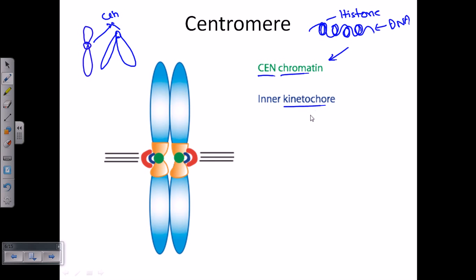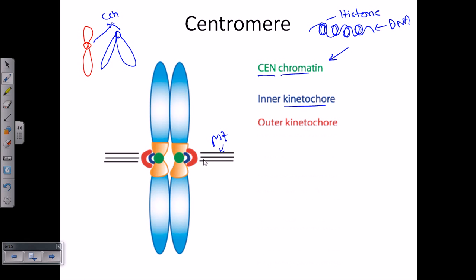Right after the CEN chromatin there is the inner kinetochore. The kinetochore is another very important structure of the centromere. It is a special structure which helps the chromosome to interact with microtubules. Microtubules are made up of tubulin proteins arranged as a tubulin polymer, which will interact with the kinetochore to hold on to the chromosomes during segregation in cell division. This blue-colored section is the inner kinetochore, present on the inner side of the centromere.